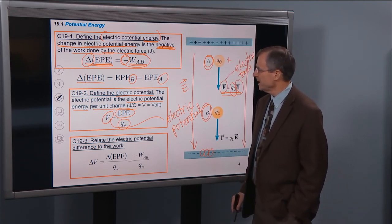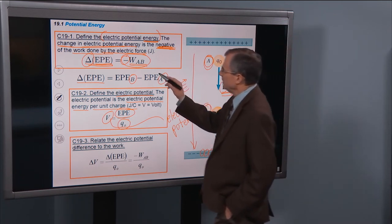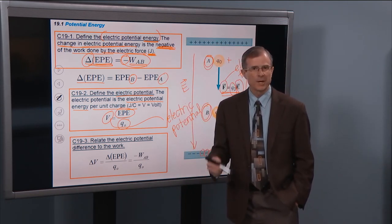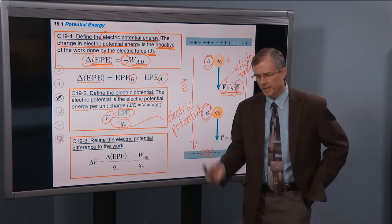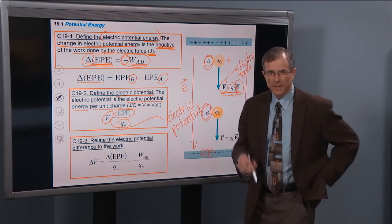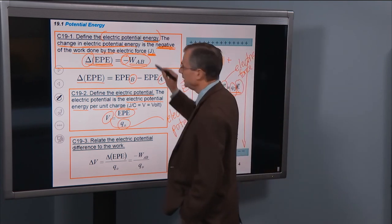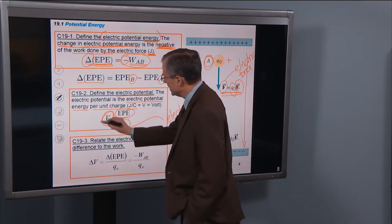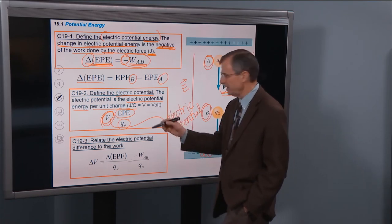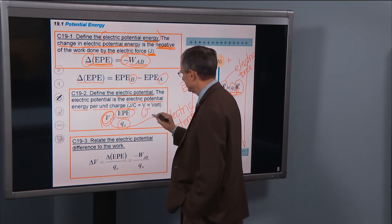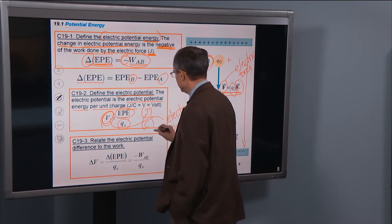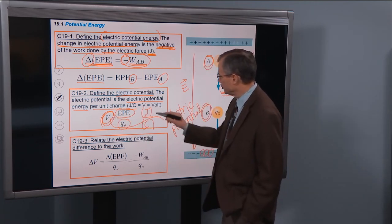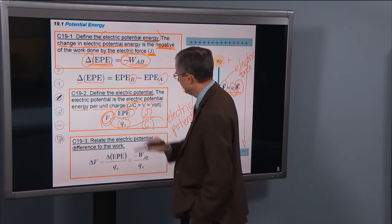Let's look at the units for both of these. The electric potential energy is measured in joules. It's an energy — a real live bonafide energy. MGH is measured in joules; one-half kx squared, one-half mv squared — all of those are energies measured in joules. The electric potential is the electric potential energy in joules divided by a charge in coulombs. So the units for the electric potential are joules per coulomb.